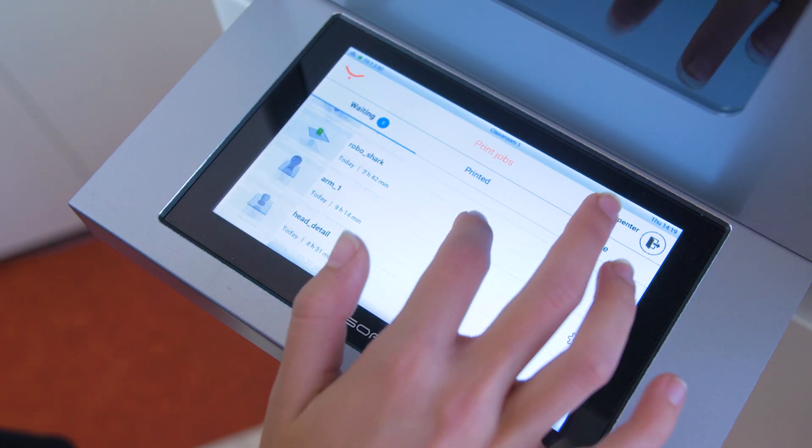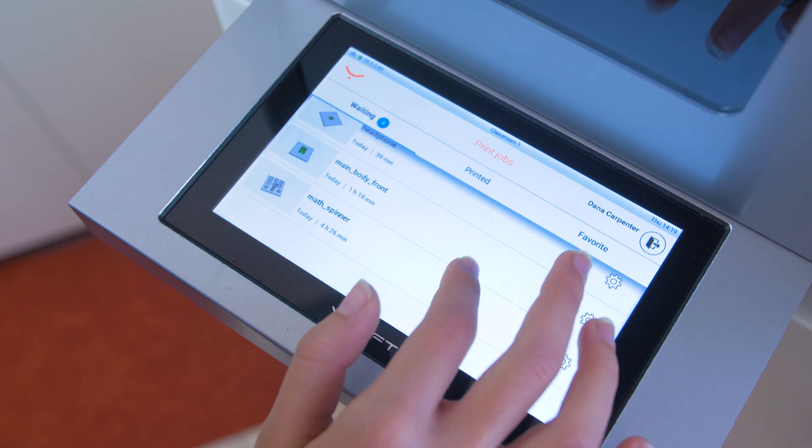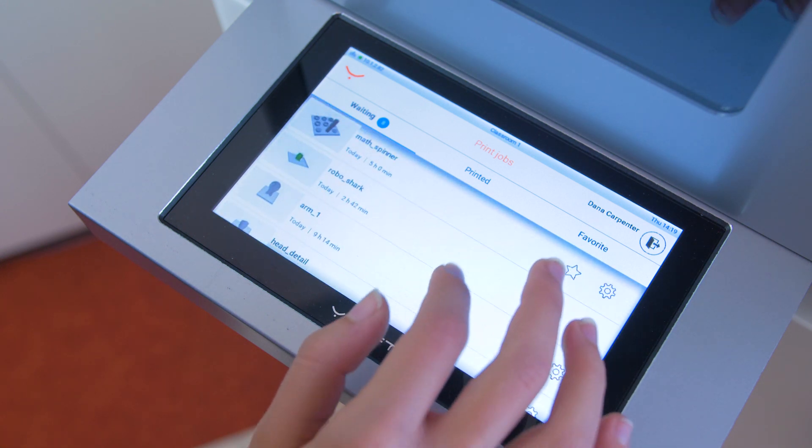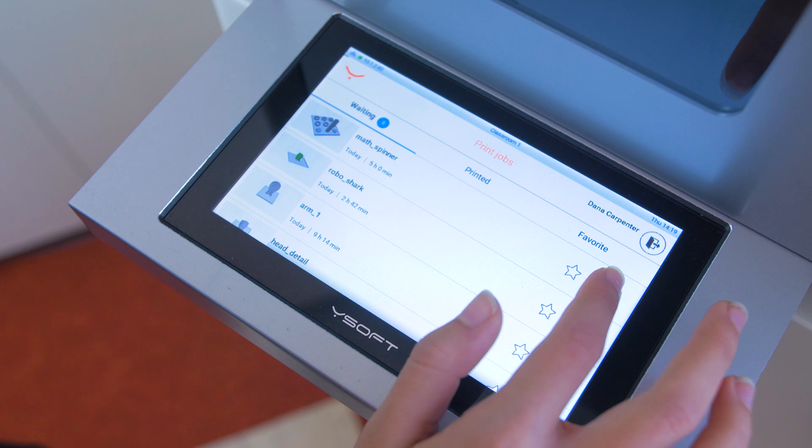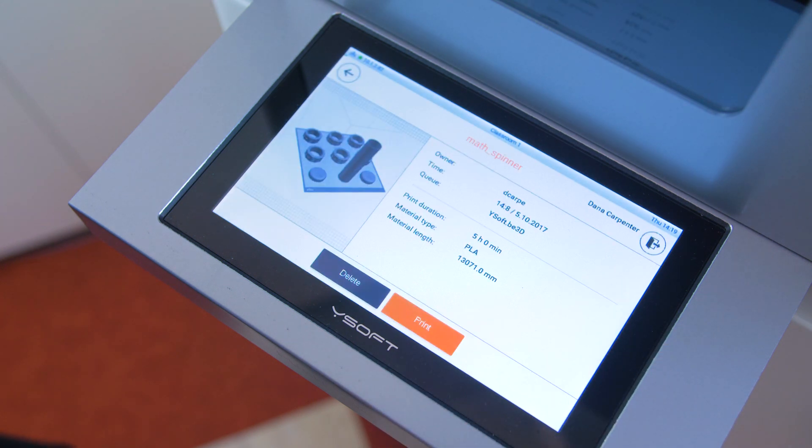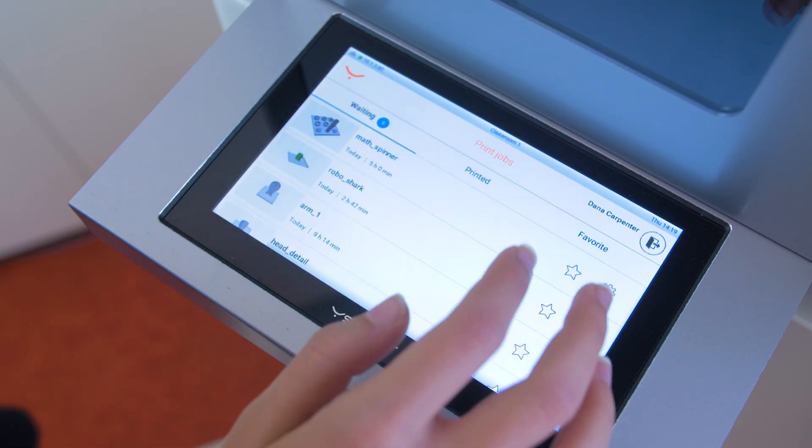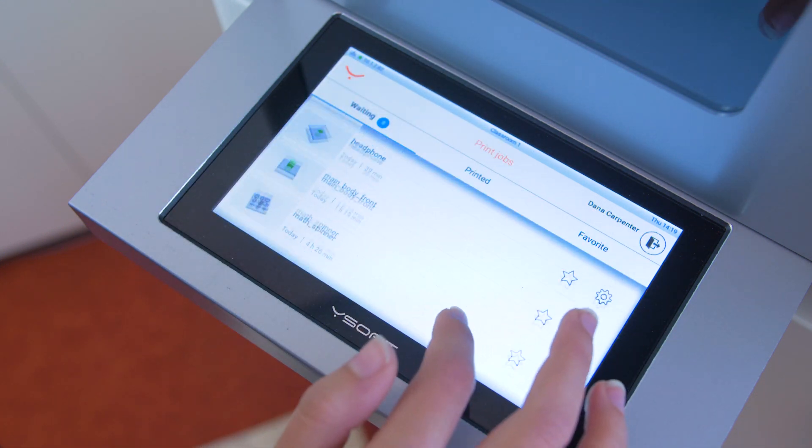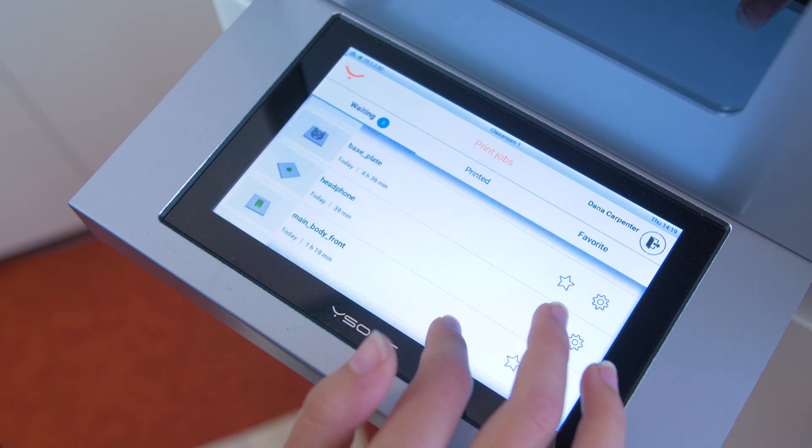I have several jobs that I have sent to the YSoft SafeQ server. If I'm not sure which job it is, I can click on the details to see a large preview of my object. Also, if I was happy with any previous prints, I can easily reprint them. It depends on the settings on how long the objects will remain available for reprinting.